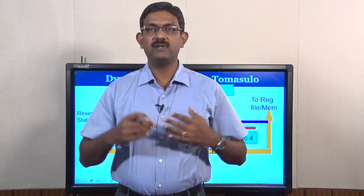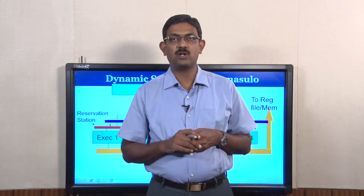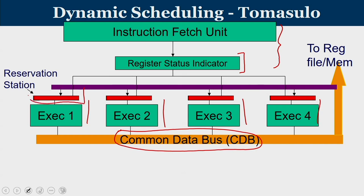To understand Tomasulo's algorithm at a better level of abstraction: you have an instruction fetch unit from where instructions are brought from memory. You have a unit called the register status indicator (RSI) whose purpose is to indicate the status of a register value — specifically, whether the register content is actually available in the register file or whether it will be produced by some execution unit. Various execution units are all connected to a common data bus, and on the input side of each execution unit you have reservation stations, which act as a queue to enter those execution units.